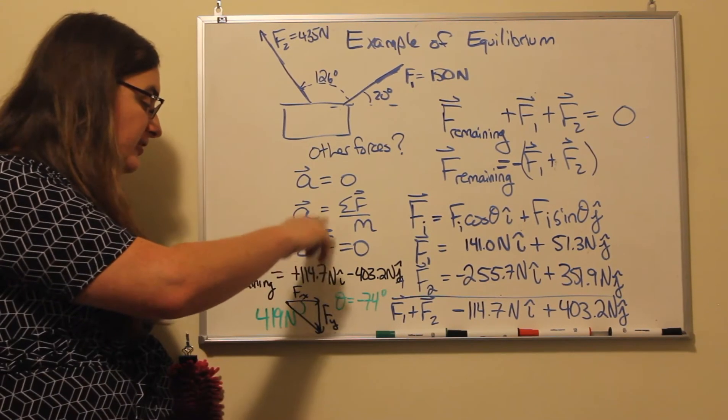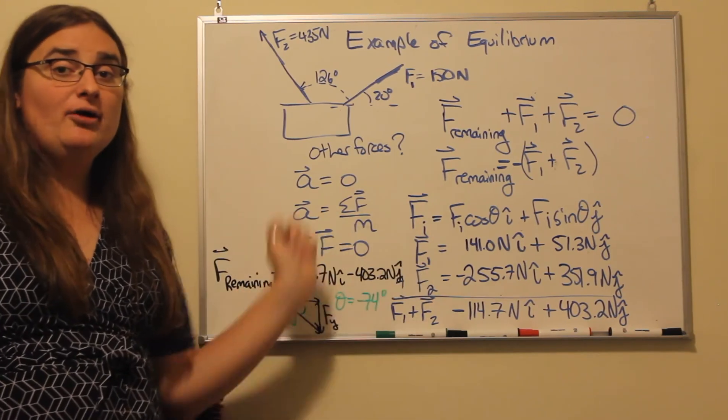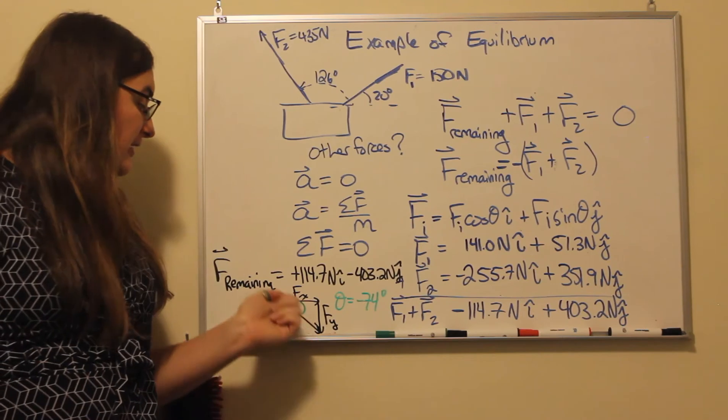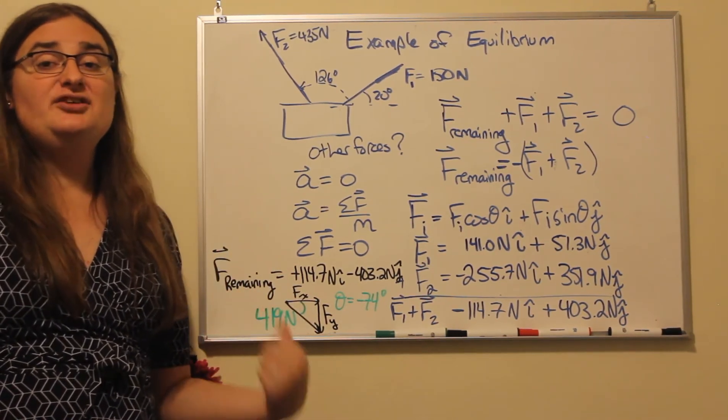Our x component, our y component - we square our x component, we square our y component, add them together, take the square root, and that gives me a hypotenuse of 419 newtons.